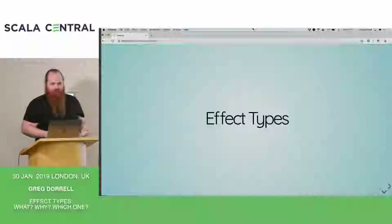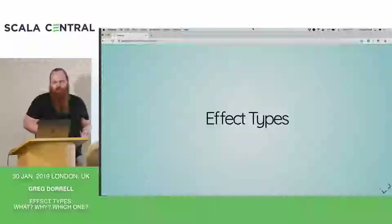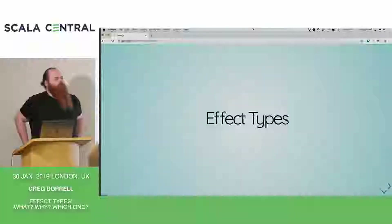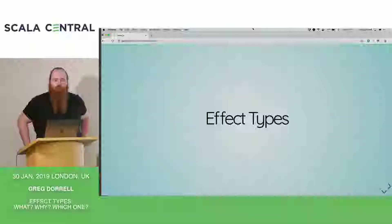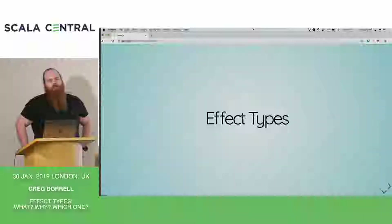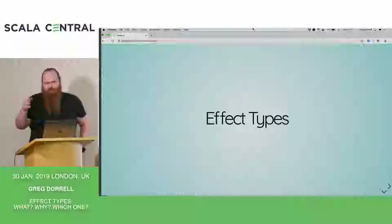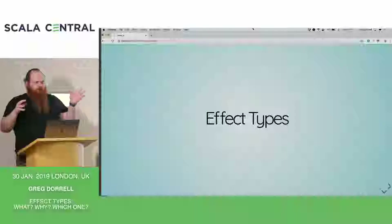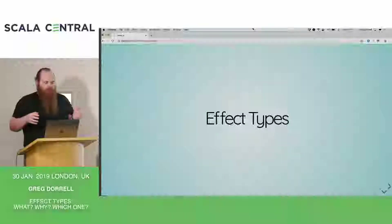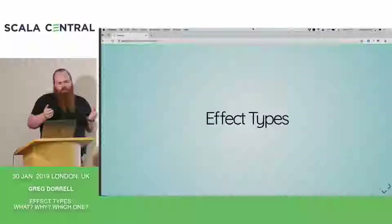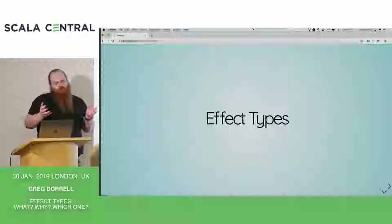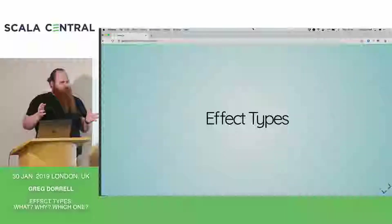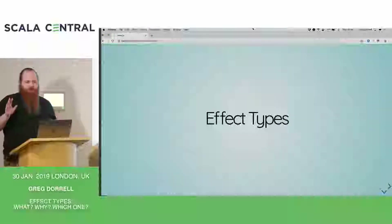But today we're going to talk about effect types. So what is an effect type? If you use Slick for database access, you might have already used an effect type. In Slick, you use DBIO action, and basically this is an effect type for working with database operations. It's kind of interesting that they use that rather than just future everywhere.